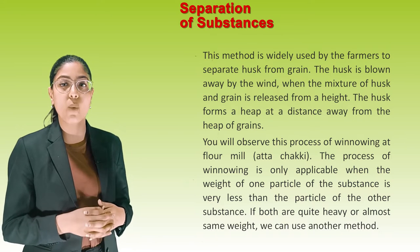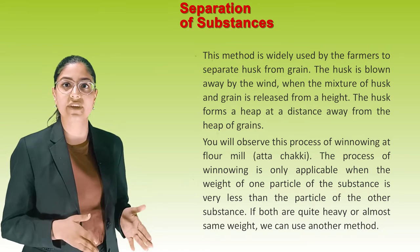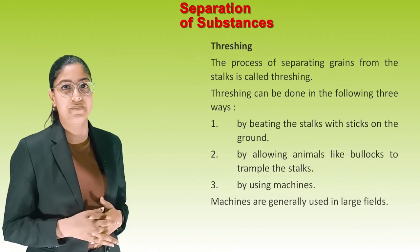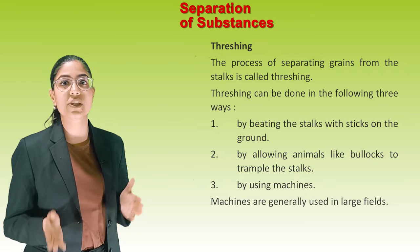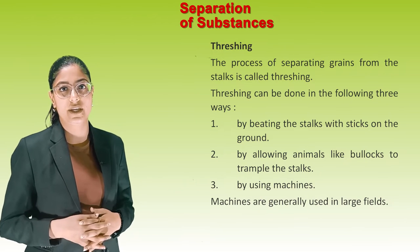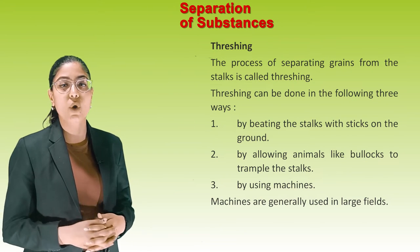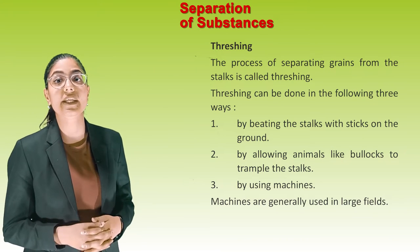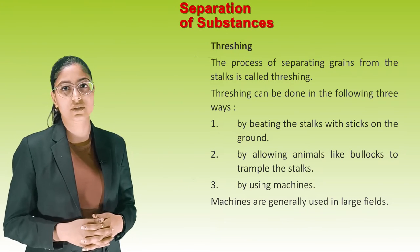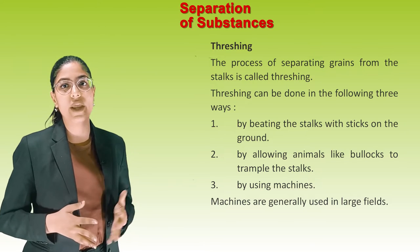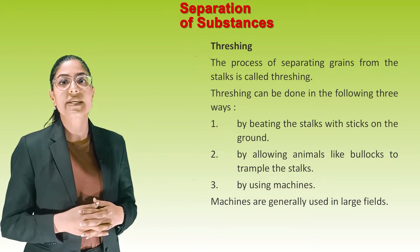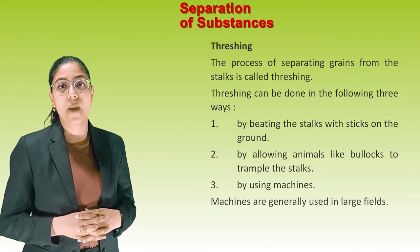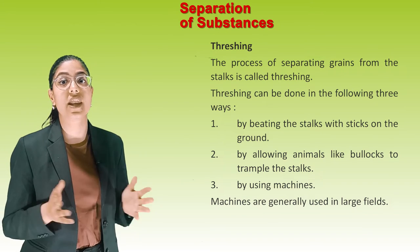If both particles are quite heavy or almost the same weight, we use another method. Threshing: The process of separating grains from the stalks is called threshing. It can be done in three ways: first, by beating the stalks with sticks on the ground; second, by allowing animals like bullocks to trample the stalks; third, by using machines, which are generally used in large fields.